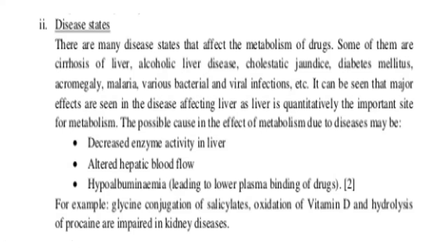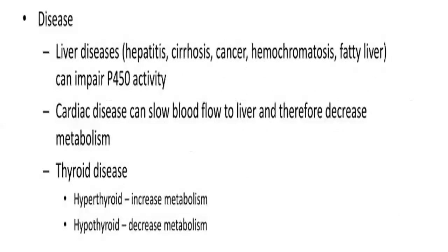Liver disease also leads to hypoalbuminemia, resulting in low plasma binding of drugs. For example, glycine conjugation of salicylate, oxidation of vitamin D, and hydrolysis of procaine are all impaired in kidney diseases. Depending upon the disease state, if the liver, kidney, or major organs are affected, the metabolism of drugs will also be altered.